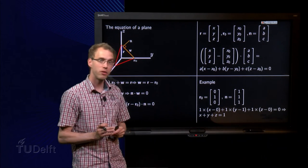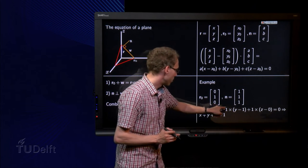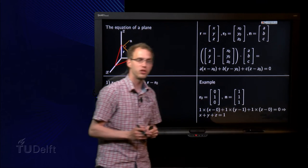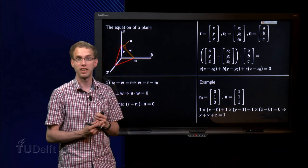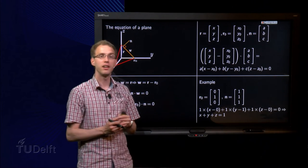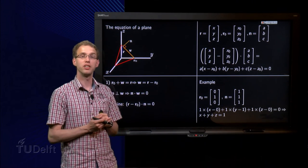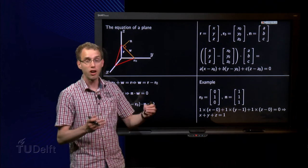And if you work it out, we get x plus y minus 1 plus z equals 0, so x plus y plus z minus 1 equals 0, or x plus y plus z equals 1. And there we have our normal equation of our plane.